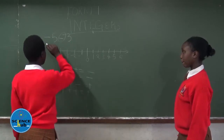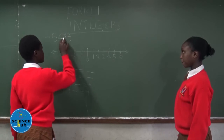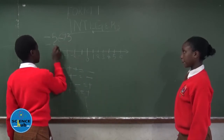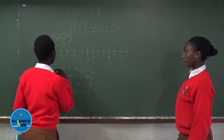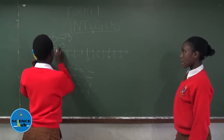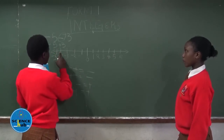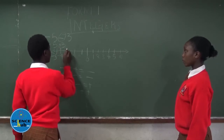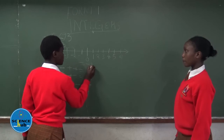So, your number is minus 5 minus 3. These two signs will give you a positive unit. You come and check in your number line: minus 5 plus 3. You identify the point, go three steps. So, your answer is minus 2.